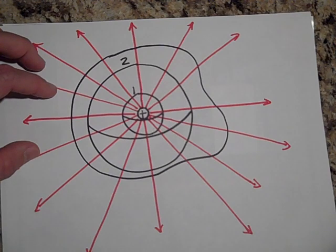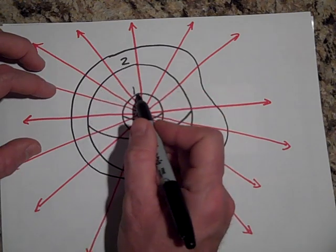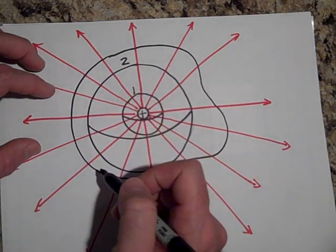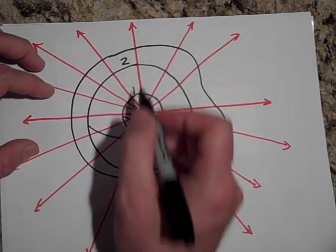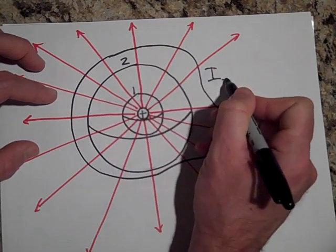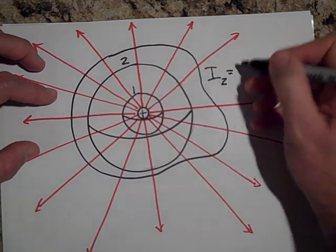And so they all have the same amount of flux through them. Each one of these has the same amount of flux. Now you might say, well, that's kind of weird because the area of number two is so much bigger than one. Yeah, the area, it is. The sphere is much bigger in surface area. So yeah, it's got more area, so the flux through two has got a big area, but the field out there is little.